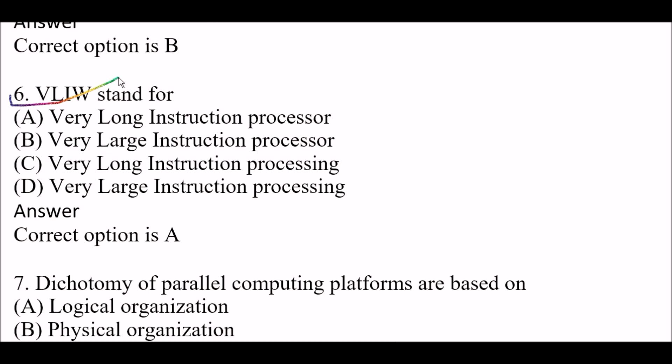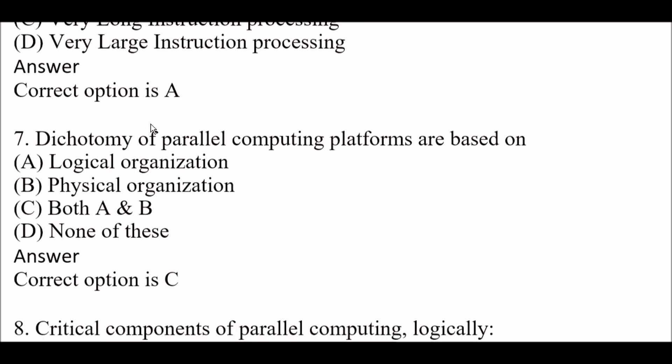Next question: VLIW stands for — and this is a very important question — option A, very long instruction processor; option B, very large instruction processor; option C, very long instruction processing; option D, very large instruction processing. The right answer is option A, very long instruction processor. Don't be confused here.